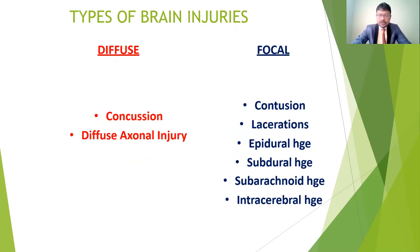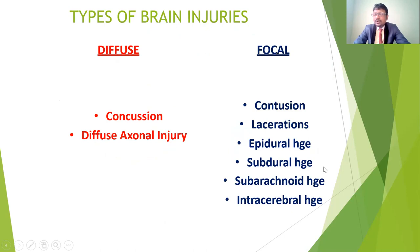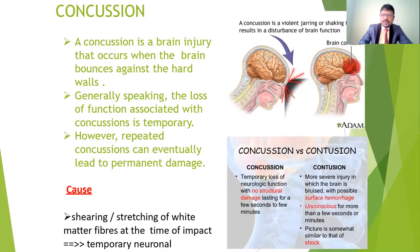Other types of head injuries include diffuse injuries and focal injuries. Diffuse injuries are concussions and diffuse axonal damage. Focal injuries include contusions, lacerations, epidural hemorrhage, subdural hemorrhage, subarachnoid hemorrhage, and intracerebral hemorrhage. These give severe focal signs and symptoms related to neuronal damage.